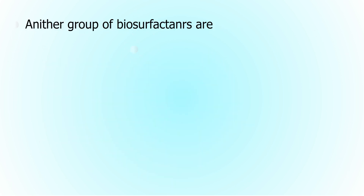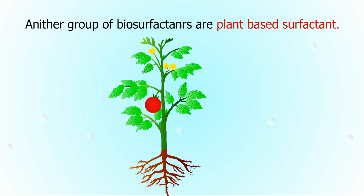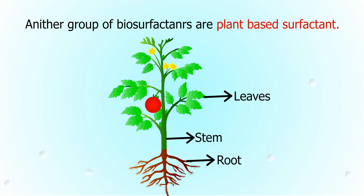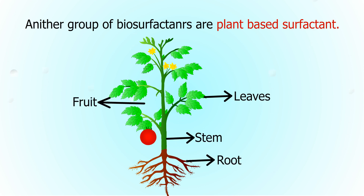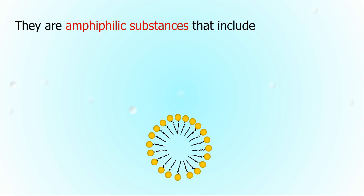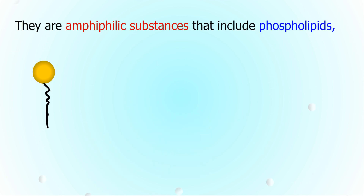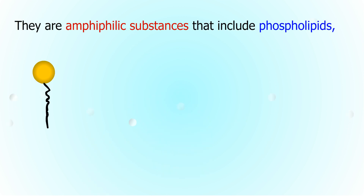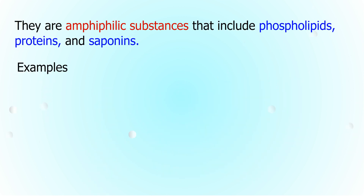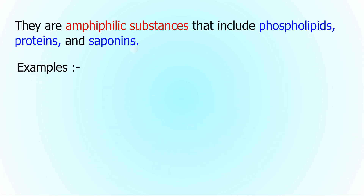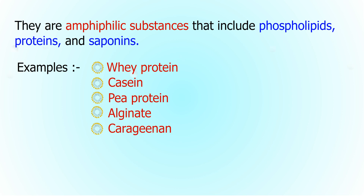Another group of biosurfactants are plant-based surfactants, found in several sections of plants including roots, stems, leaves, fruit, and seeds. They are amphiphilic substances that include phospholipids, proteins, and saponins. Examples are whey protein, casein, alginate, carrageenan, and lecithin.